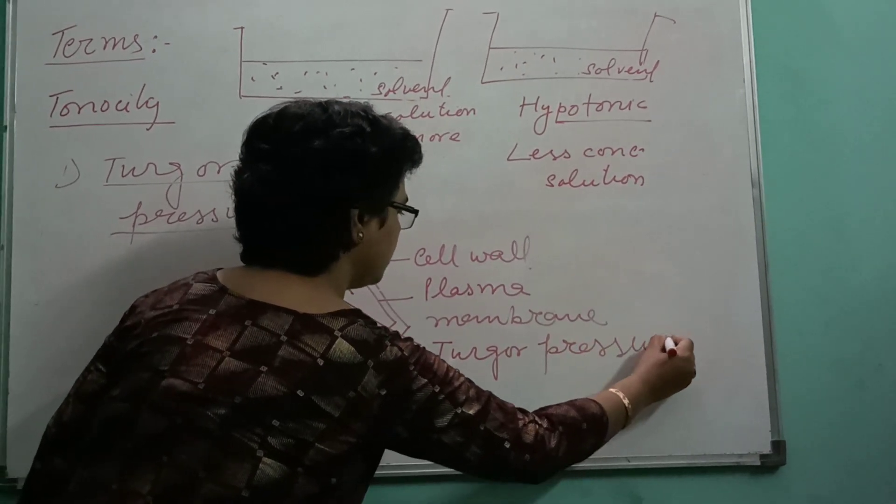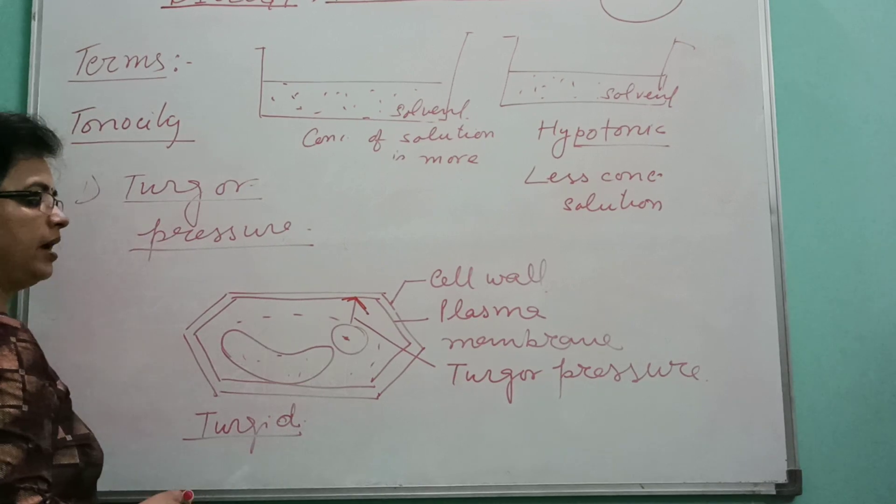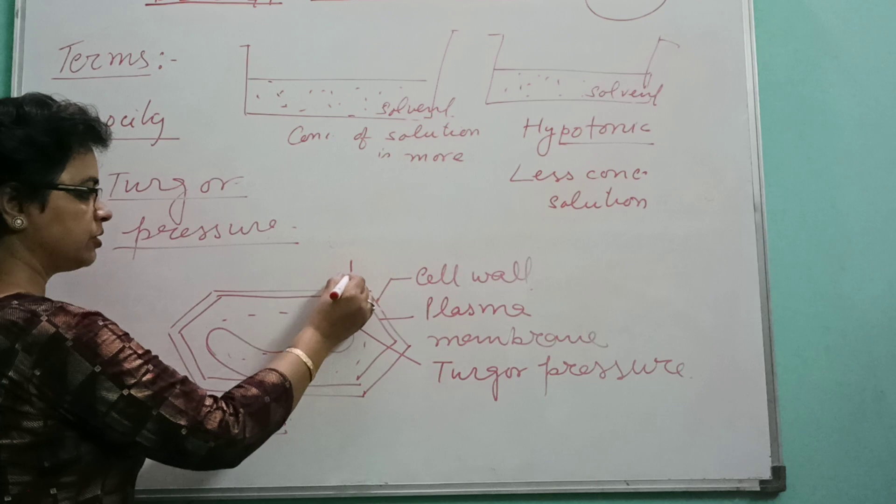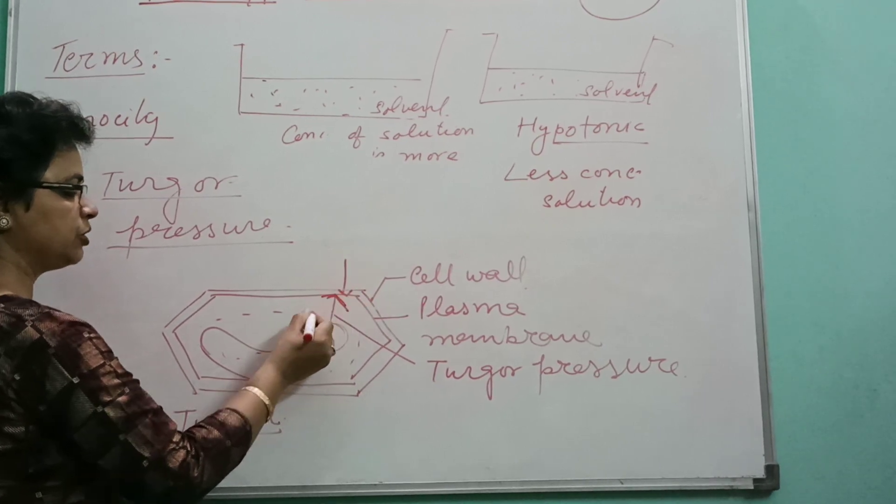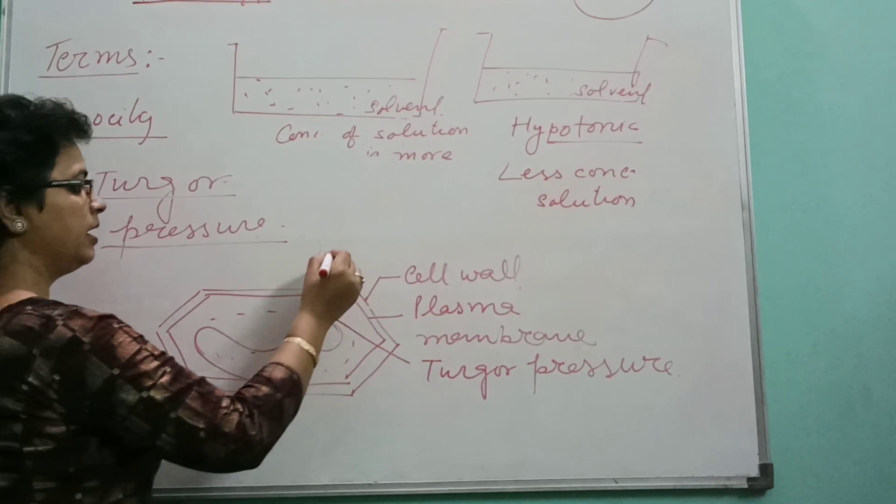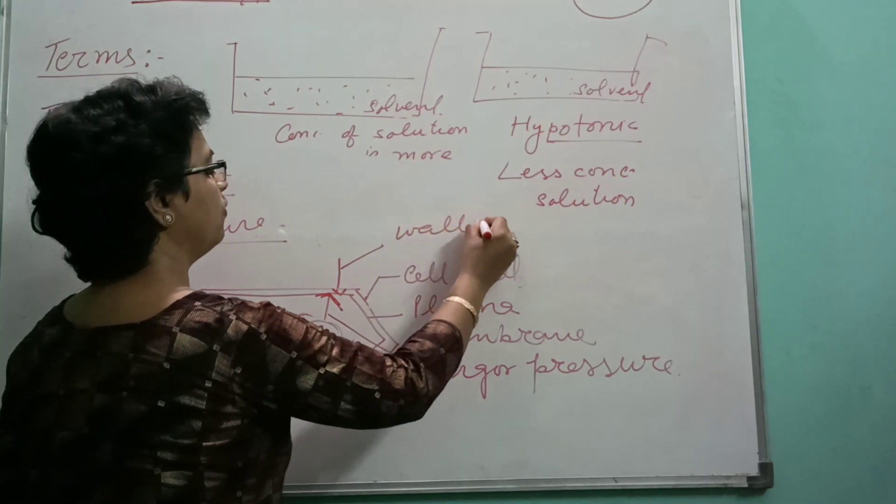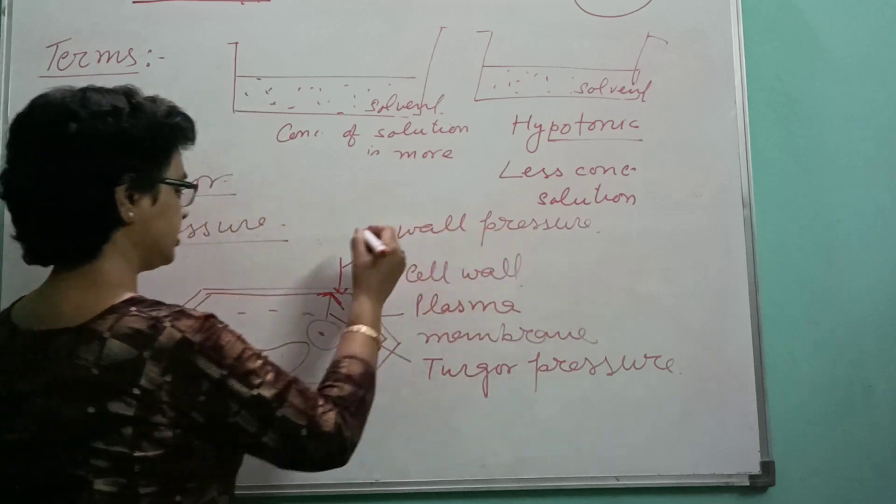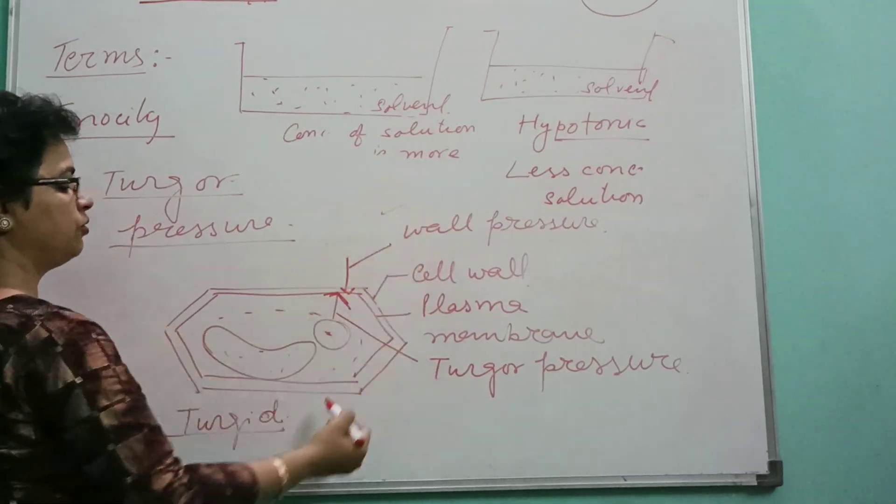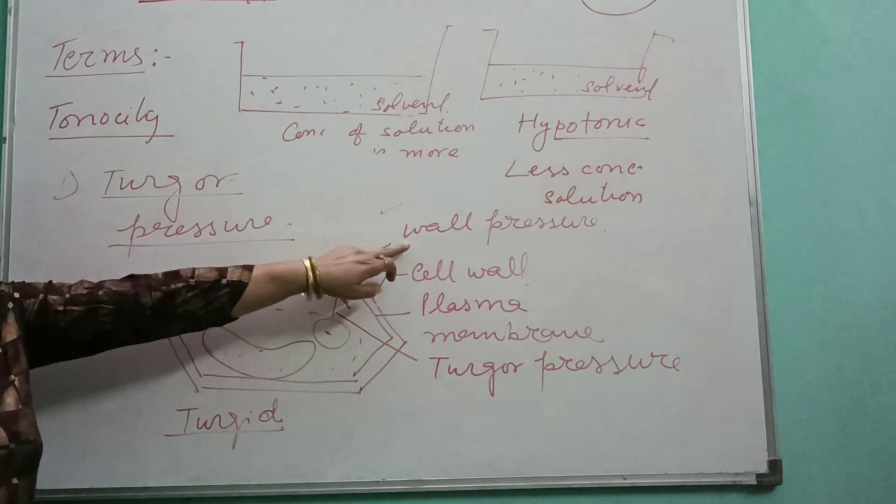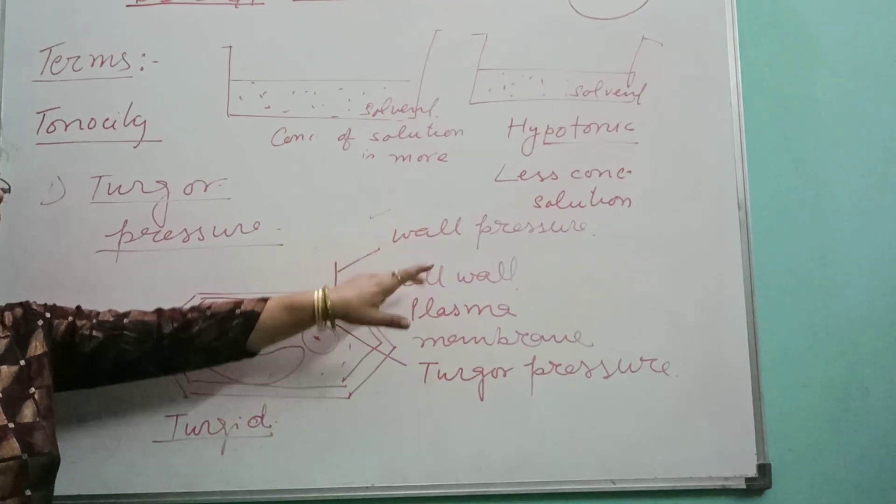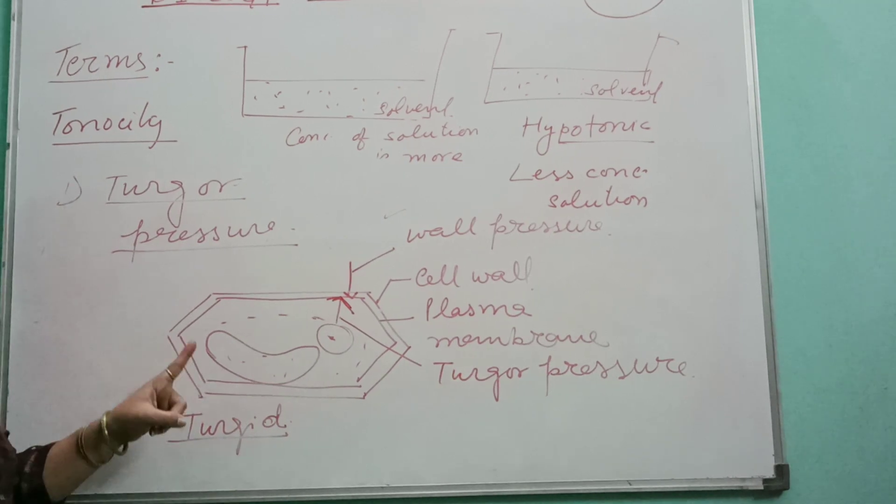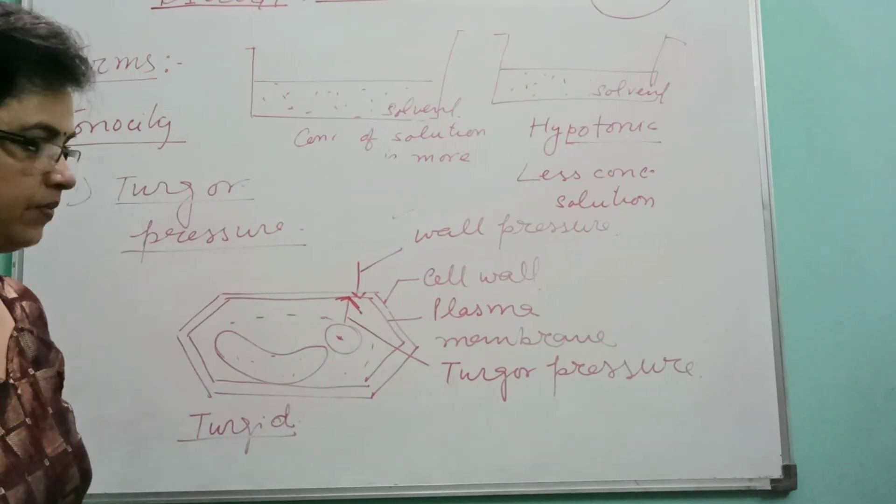As we know that every action has a reaction in opposite direction, the wall will create a pressure on this cell content, and this pressure is termed as wall pressure. The wall pressure and turgor pressure are specific characters of the plant cell only.